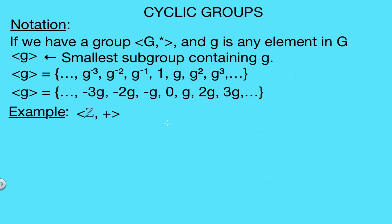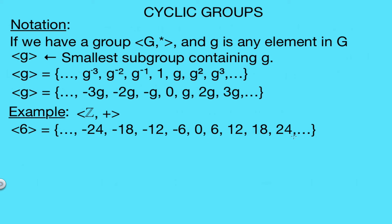Let's look at the set of integers with addition. Taking the element 6, we can write the cyclic subgroup ⟨6⟩, which is the smallest subgroup containing 6. Repeatedly adding 6 to itself gives 6, 12, 18, 24, and so on to infinity. Adding the inverse of 6, which is negative 6, to itself gives 0, then negative 6, negative 12, negative 18, negative 24, and so on. This is a subgroup of the integers equal to 6 times the set of integers — all integer multiples of 6. It's the smallest subgroup containing 6 because every other element must be there by the definition of a group.